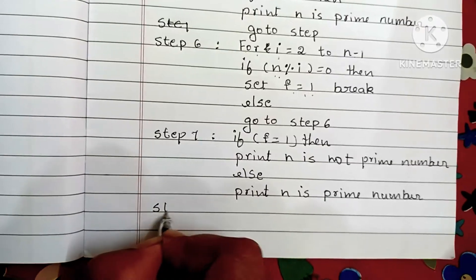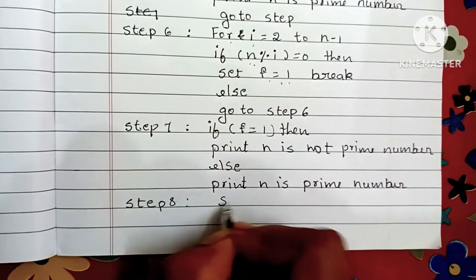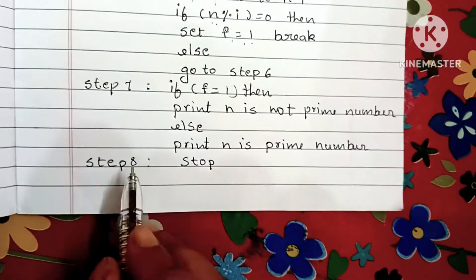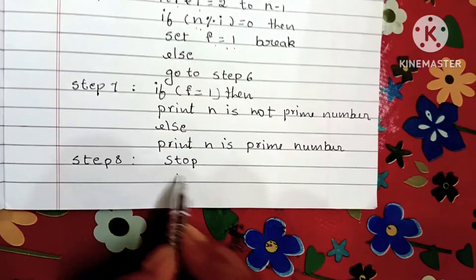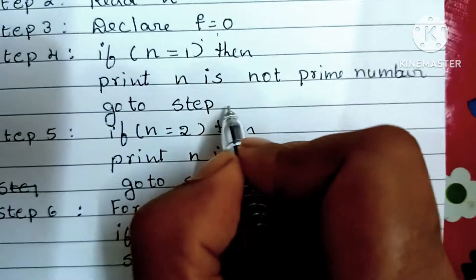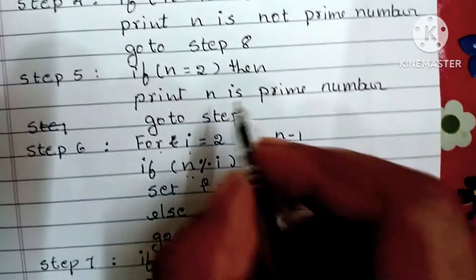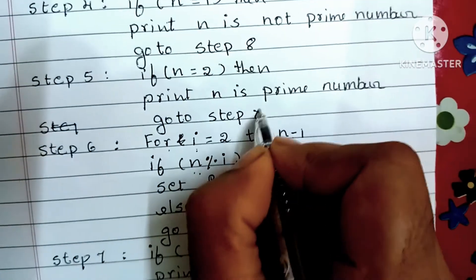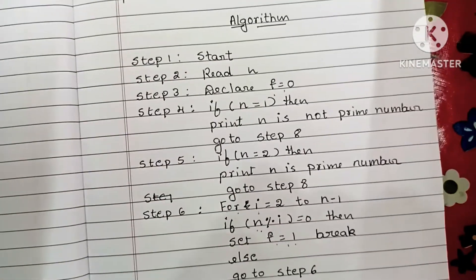Step 8: we stop the algorithm using the stop statement. Going back, in step 4 we write go to step 8, and in step 5 we also write go to step 8. This completes the algorithm to find whether a given number is prime or not.